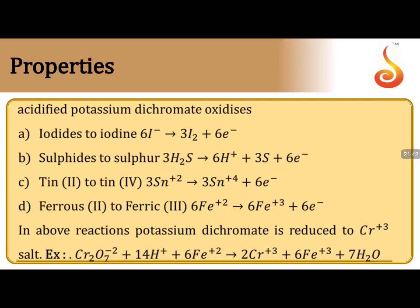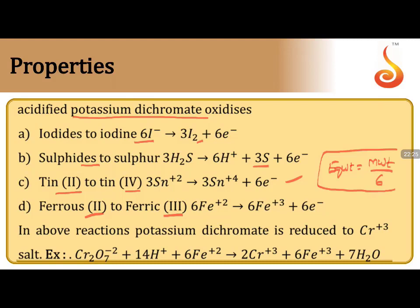K₂Cr₂O₇ acts as an oxidizing agent only in acid medium; in basic medium it converts to K₂CrO₄ with no change in oxidation state and no oxidizing property. Common oxidizing reactions: iodides to iodine, sulfides to sulfur, Sn²⁺ to Sn⁴⁺, and ferrous to ferric. The equivalent weight of K₂Cr₂O₇ is molecular weight divided by 6 — meaning the n-factor for K₂Cr₂O₇ is 6.